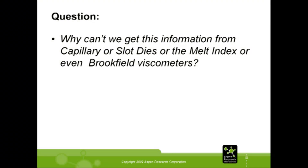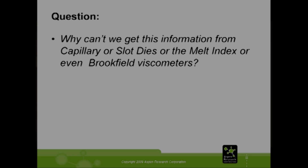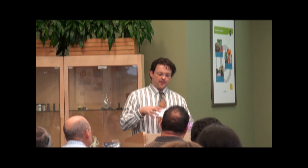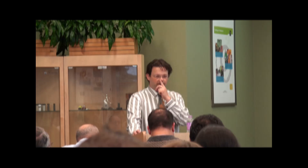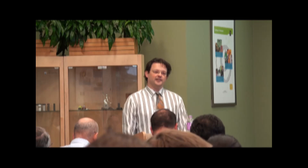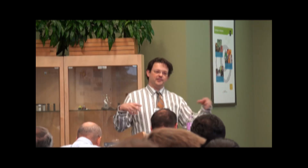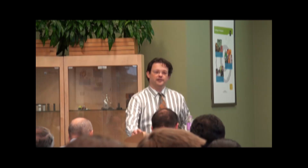The question is: why can't you get this information from the capillary geometry, slot dies, melt index rate, or Brookfield? That's because all these other instruments operate at a shear rate independent of time. You have to have that variation in time in order to be able to get out G prime and G double prime. If all you have is viscosity, you have one variable — you can't manipulate that backwards to get G double prime. Whereas if you have G prime and G double prime, you can manipulate that forward to get viscosity.